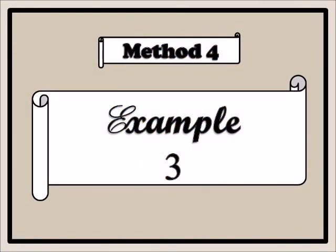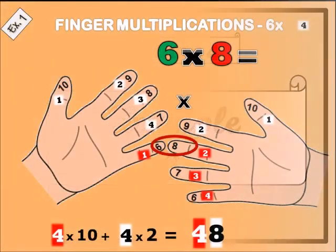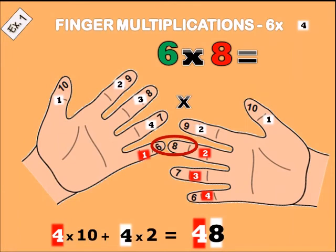Example three: six times eight. You put the middle finger and the little finger together. Count down — one, two, three, four — so four times ten is forty. On the left hand we have four, and on the right hand we have two fingers — four times two is eight. Forty plus eight is forty-eight. Six times eight equals forty-eight.